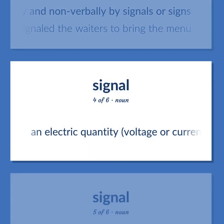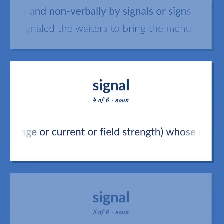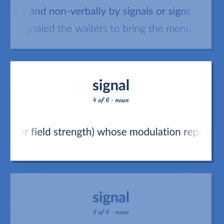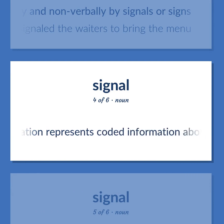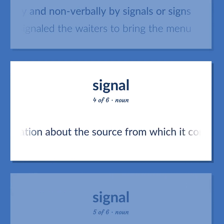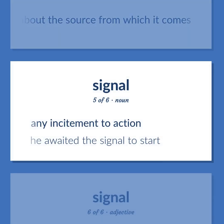Signal: An electric quantity — voltage, current, or field strength — whose modulation represents coded information about the source from which it comes. Any incitement to action. Example: He awaited the signal to start.